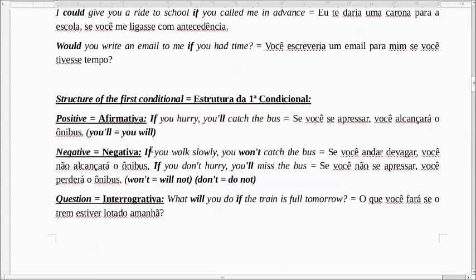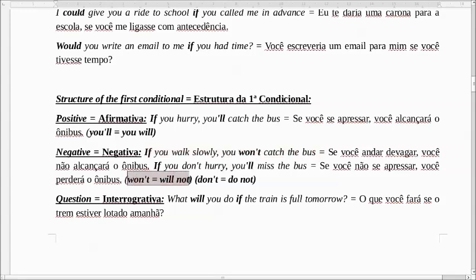A negativa: If you walk slowly, you won't catch the bus. Se você andar devagar, você não alcançará o ônibus. O 'won't' é a negativa do 'will' — significa 'will not'.